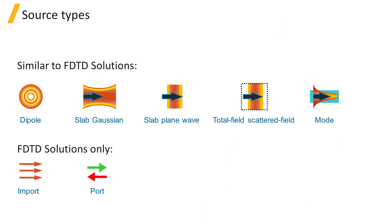The available source types that can be added in a VAR FDTD simulation are the dipole source, slab-gaussian, slab-plane wave, total field-scattered field, and the mode source. These sources are similar to the corresponding source types in FDTD solutions.